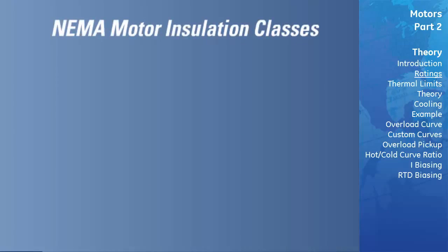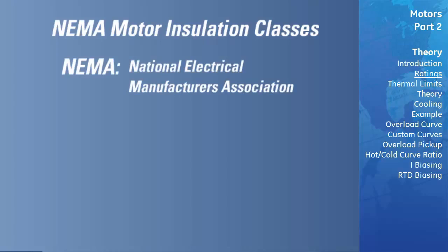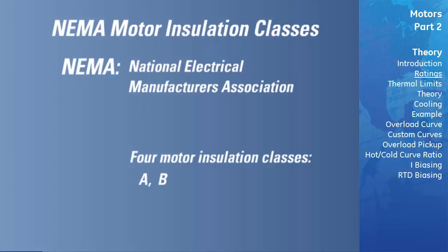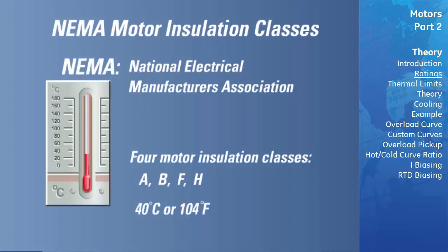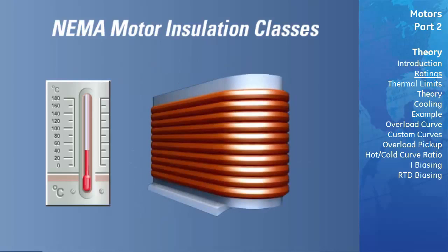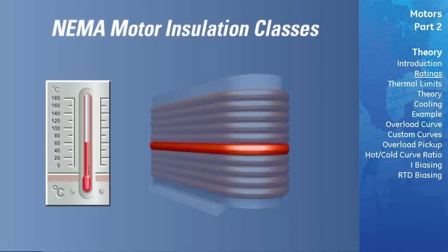NEMA Motor Insulation Classes. NEMA, the National Electrical Manufacturers Association, has established four motor insulation classes: A, B, F, and H. The specification has standardized on an ambient temperature of 40 degrees Celsius, or 104 degrees Fahrenheit, for all classes. Each class of insulation has a different maximum motor winding temperature rise, in addition to a hot spot temperature, which is an additional temperature rise for the windings that are surrounded by other windings.